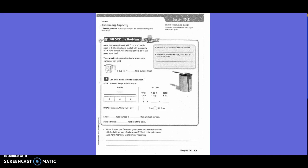Mara has a can of paint with three cups of purple paint in it. She also has a bucket with a capacity of 26 fluid ounces. Will the bucket hold all of the paint? The capacity of a container is the amount the container can hold. So she has three cups, and she wants to know if it's going to fit in a 26 fluid ounce container. What capacity does Mara need to convert? Cups to fluid ounces.